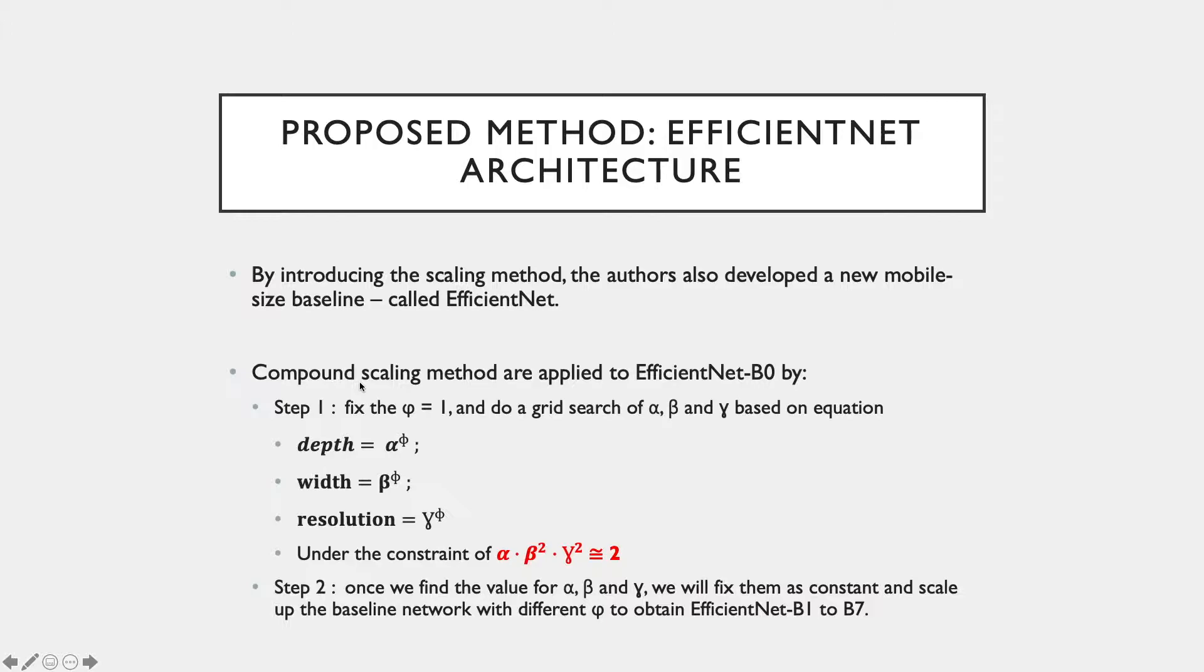Since model scaling does not change the layer operator in the baseline network, having a good baseline network is very important. The authors evaluate their scaling method using existing convolutional networks, and by tuning that, they develop a new mobile-sized baseline called EfficientNet. Starting from the baseline EfficientNet-B0, these are the steps for how they use their compound scaling method and apply to their model. There are two steps.